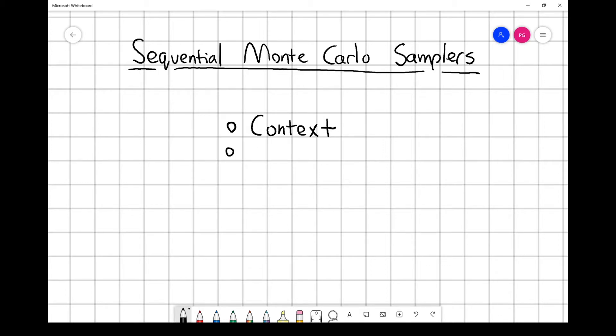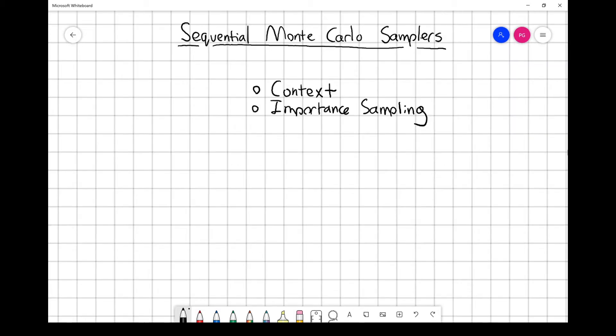For the second part of this video we'll look at importance sampling, which really lies at the heart of sequential Monte Carlo samplers. We're going to start by describing the basic fundamental problem that we want to address and then give some context to that problem with an example.